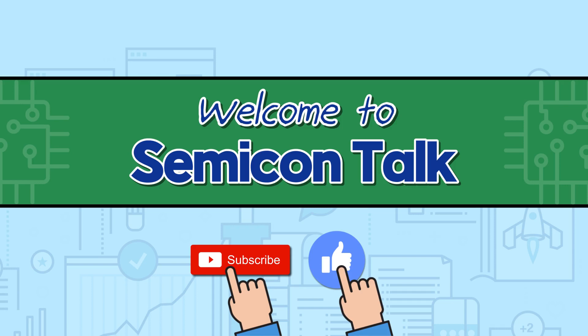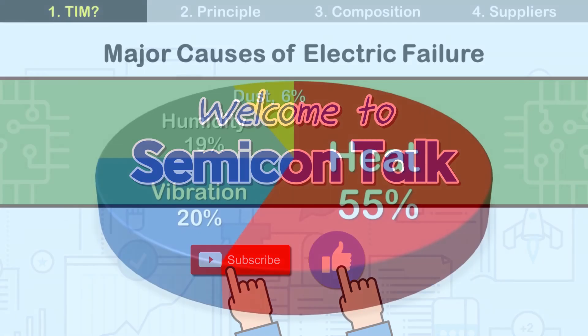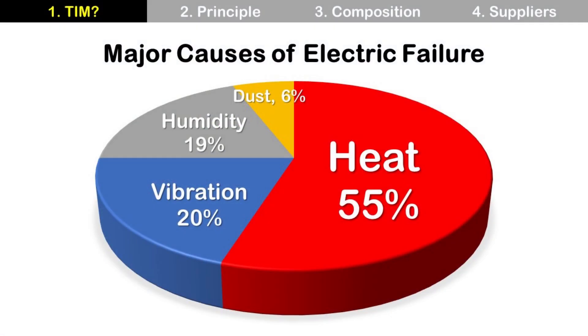Hello everyone. Welcome to SemiconTalk. Today's topic is Thermal Interface Material, in short, TIM. Before we talk about TIM, why do we need to talk about TIM? Here are the major causes of electronic failure, and heat is the number one cause with 55%. That is why we need to understand about heat in semiconductors.